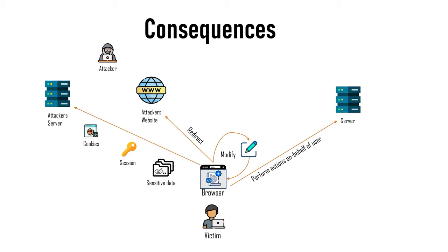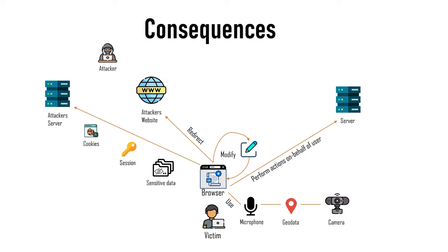It can also perform other operations like issuing requests on behalf of the user. For banking applications, this might even involve calling a money transfer API using a browser-stored access token or authentication cookies. It might even use features like the microphone, geodata, or web camera if the user has granted proper permissions to the application beforehand.